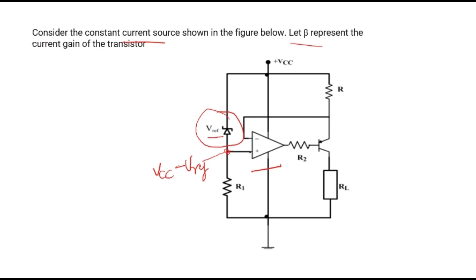Now if we talk about the op-amp, due to virtual ground — the virtual ground will occur between the non-inverting and inverting terminals — this potential will appear at the non-inverting terminal. Due to virtual ground, the inverting terminal will have the same potential: VCC minus V-reference. So we can say that this point is having VCC minus V-reference.